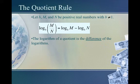Now the quotient rule. If we have log base b of m divided by n, then this equals log base b of m minus log base b of n. Where a product was rewritten using addition, a fraction or division is going to be rewritten using subtraction. The logarithm of a quotient is the difference of the logarithms. Note this is very important: we see one log base b of m divided by n — we do not see log base b of m all divided by log base b of n.